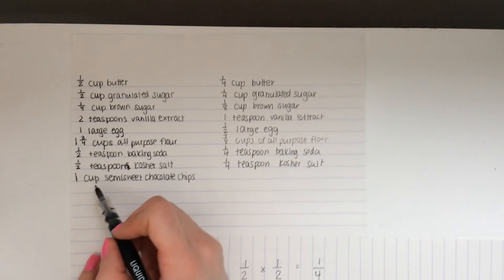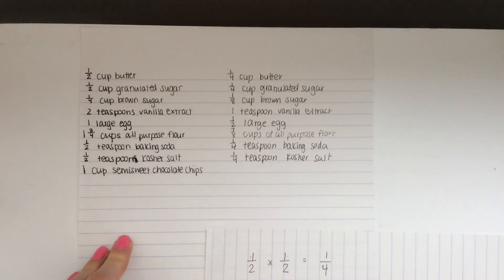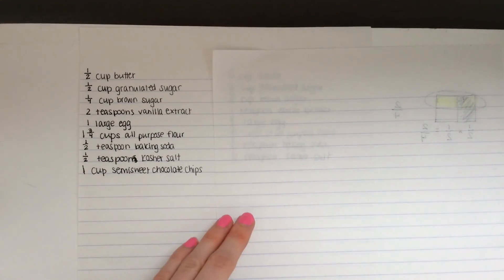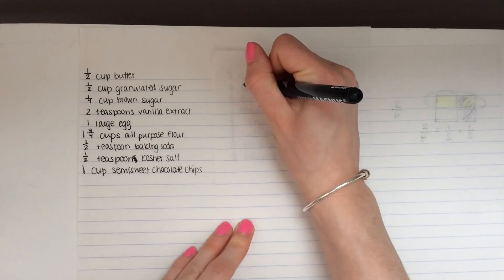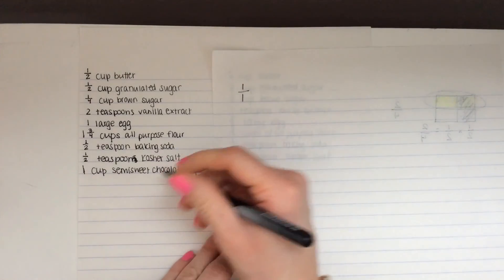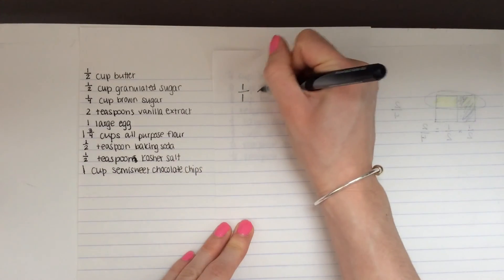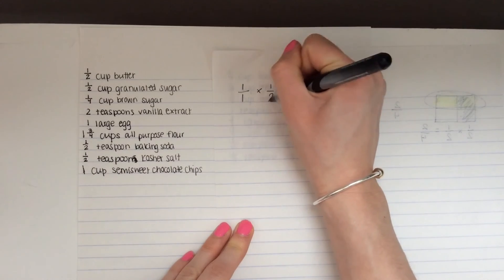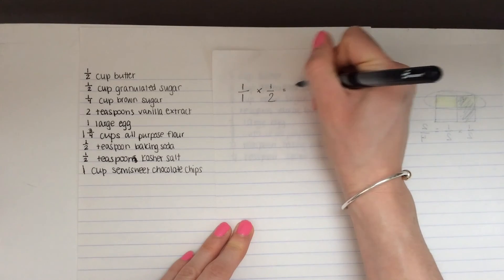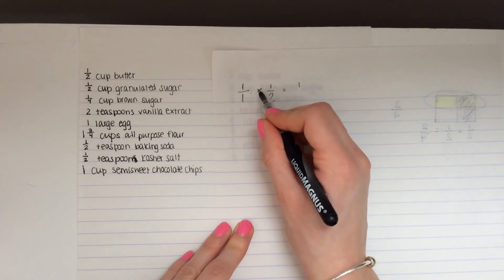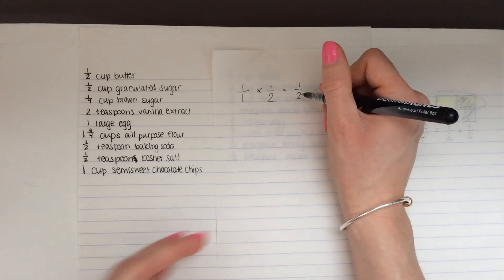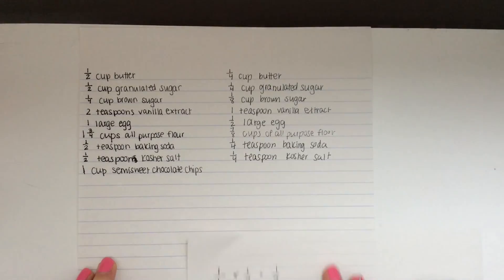And the last one — one cup of semi-sweet chocolate chips. So we have one whole. I know we can write one whole like this. And we're going to multiply by one half. Multiplying across: one times one equals one, one times two equals two. So one times one half equals one half.